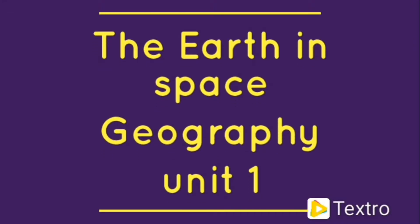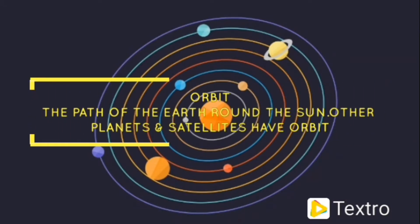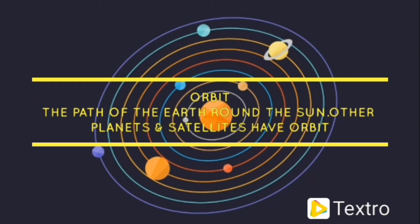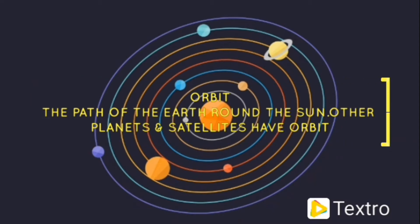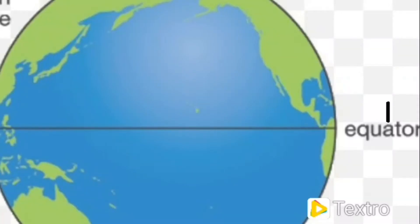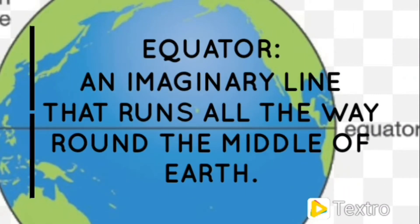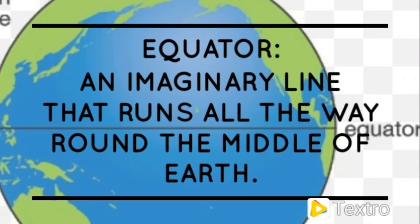Today we will discuss about the earth in space. This is an orbit, the path of the earth around the Sun. Other planets and satellites also have orbits. This is the equator, an imaginary line that runs all the way around the middle of the earth.